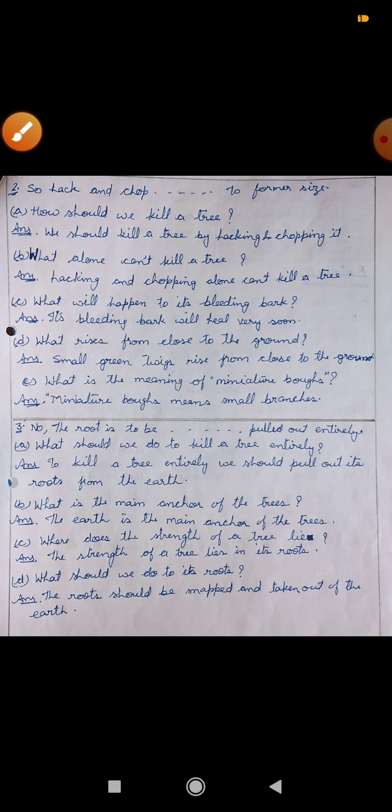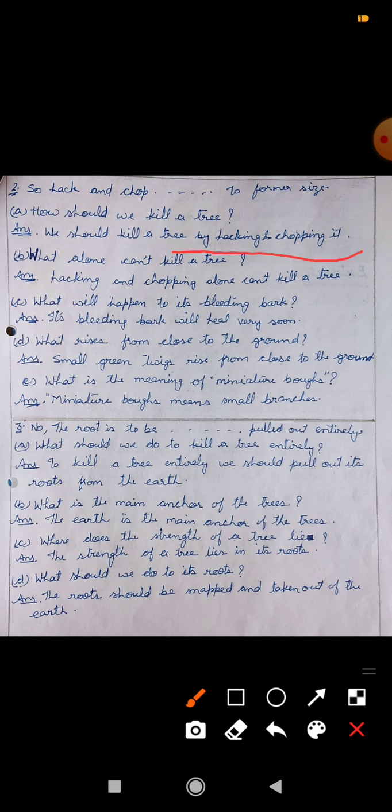So, next, extract number two. Second extract is... How should we kill a tree? We should kill a tree by hacking and chopping it. Next, What alone can't kill a tree? Hacking and chopping alone can't kill a tree. What will happen to its bleeding bark? Jho uski bleeding bark hai, uske saath kya hooga?